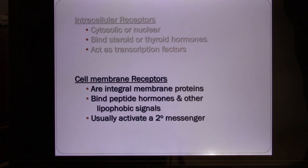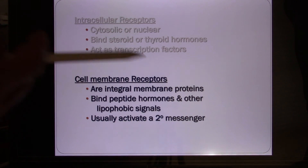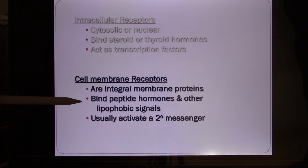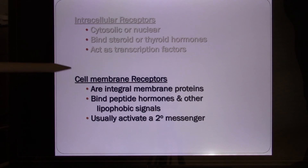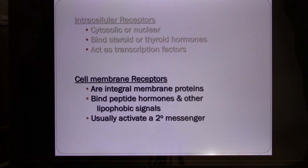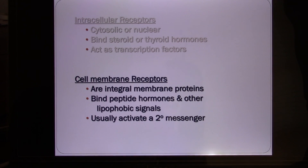Now let's look at the membrane receptor. This kind of signal is a lipophobic chemical signal — non-lipid or non-lipid soluble. A lot of chemical signals belong to this category, including peptide hormones and all neurotransmitters. This kind of signal cannot bind with intracellular receptors — it has to bind with the membrane receptor, which will activate the second messenger system to trigger the cell's response.